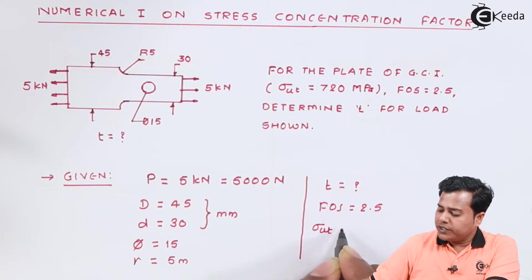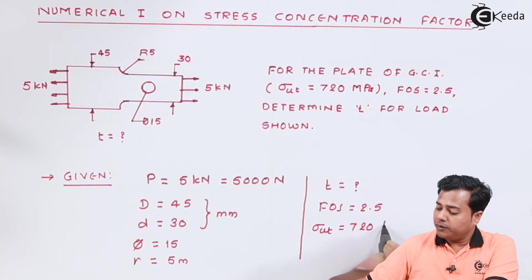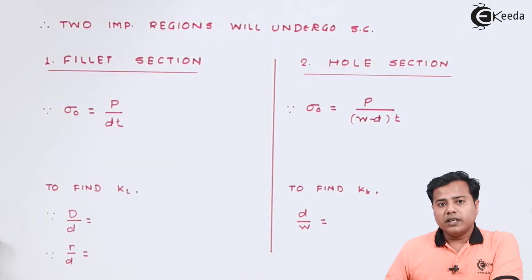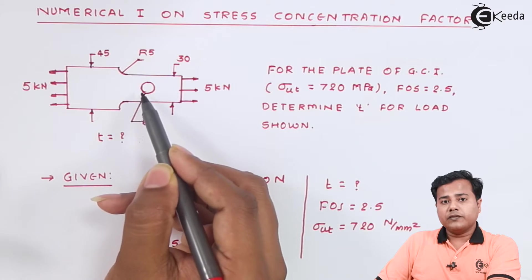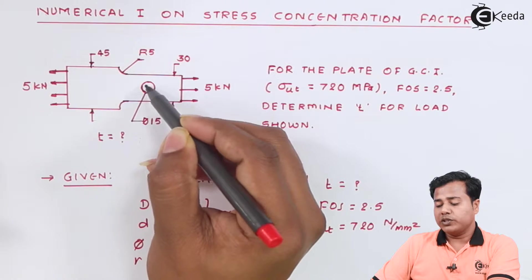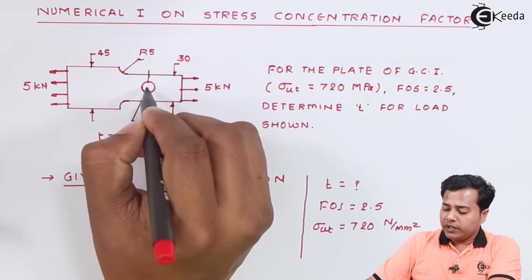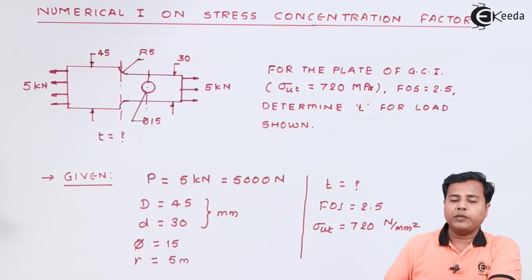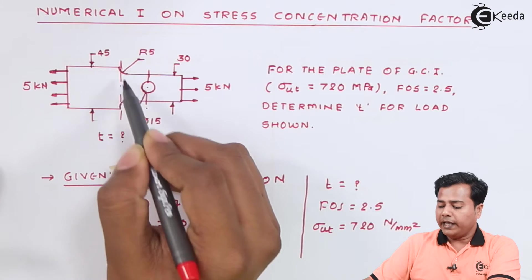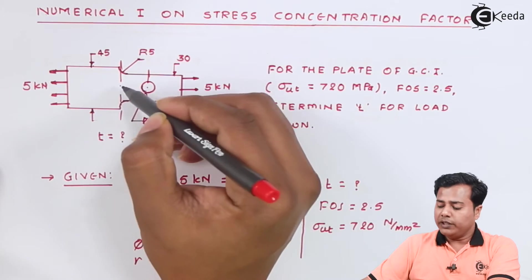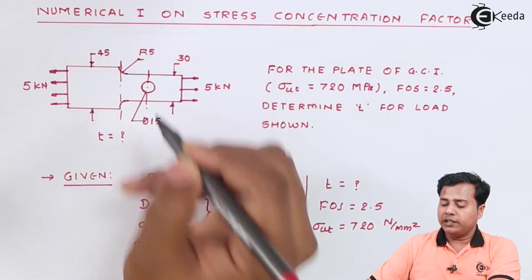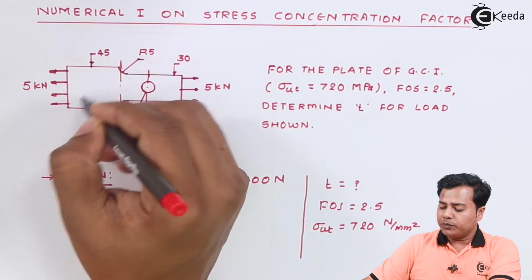Ultimate value of stress is equal to 720 megapascal which is nothing but Newton per millimeter square. These are the two important areas where variation of area is happening. This is the first region where the change is happening and this is the second region where the change is happening. Let us name them area of hole and area of fillet. We need to consider these two areas because the stress concentration is going to take place only in this area because for all rest of the areas or rest of the regions area of cross section is uniform.